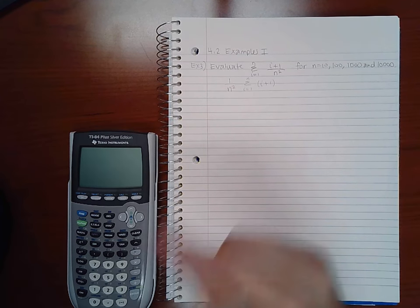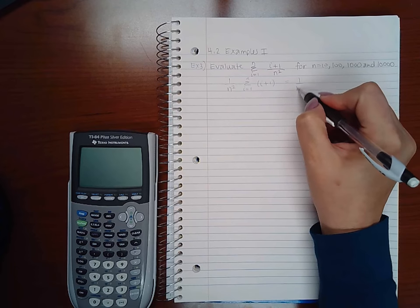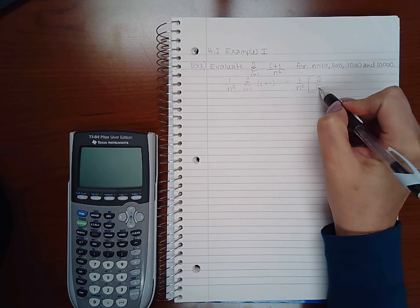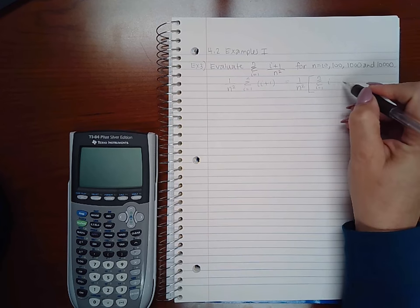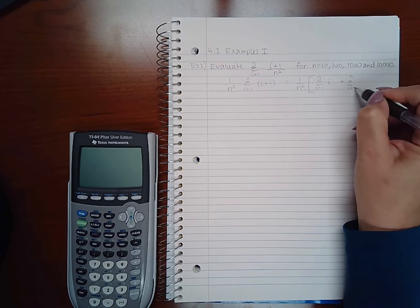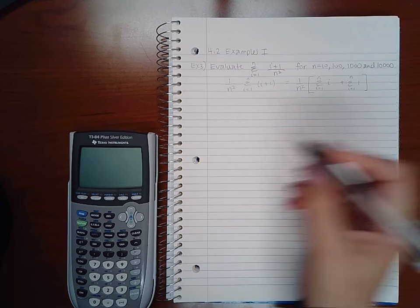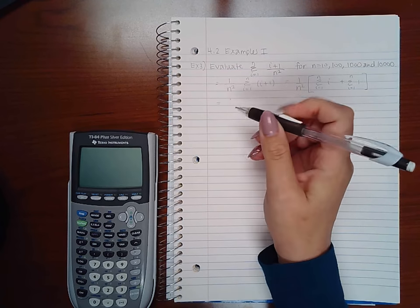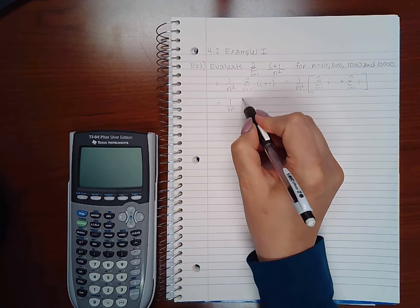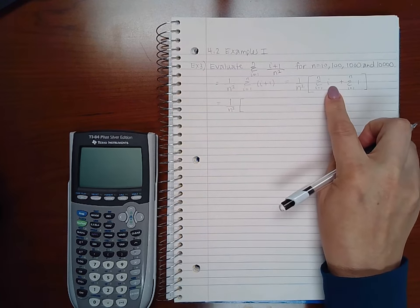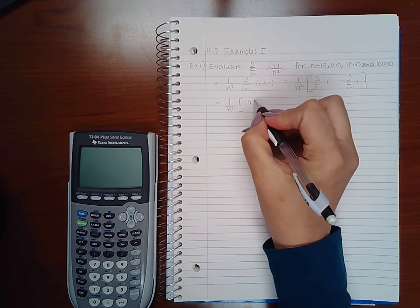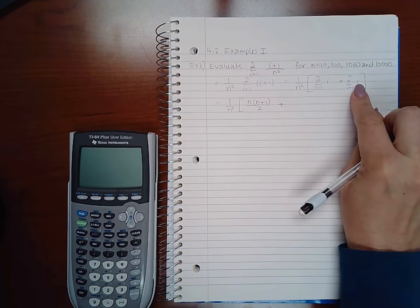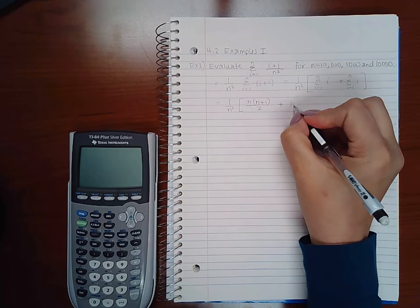The next thing I want to do is separate this summation. So I have 1 over n squared, and then I'm going to have the summation of this term i plus the summation of the second term 1. And now here I'm going to apply my summation rules. So the summation of i is going to be n times n plus 1 over 2, and the summation of a constant is just that constant times n.